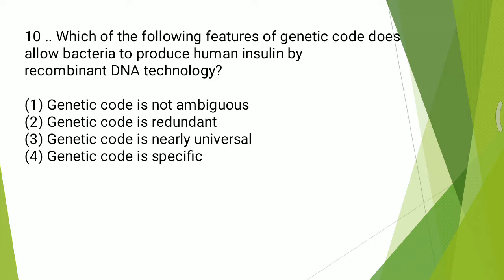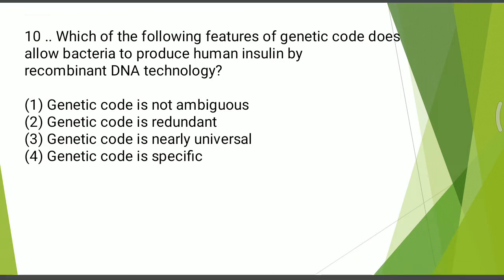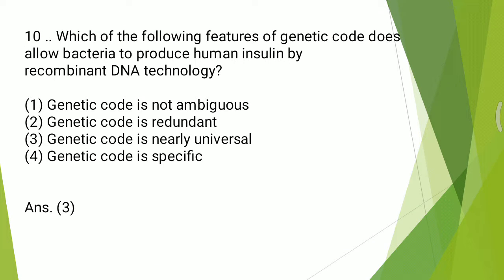Tenth question: which feature of the genetic code allows bacteria to produce human insulin by recombinant DNA technology? Options: genetic code is not ambiguous; genetic code is redundant; genetic code is nearly universal; genetic code is specific. The correct answer is the third option — genetic code is nearly universal.